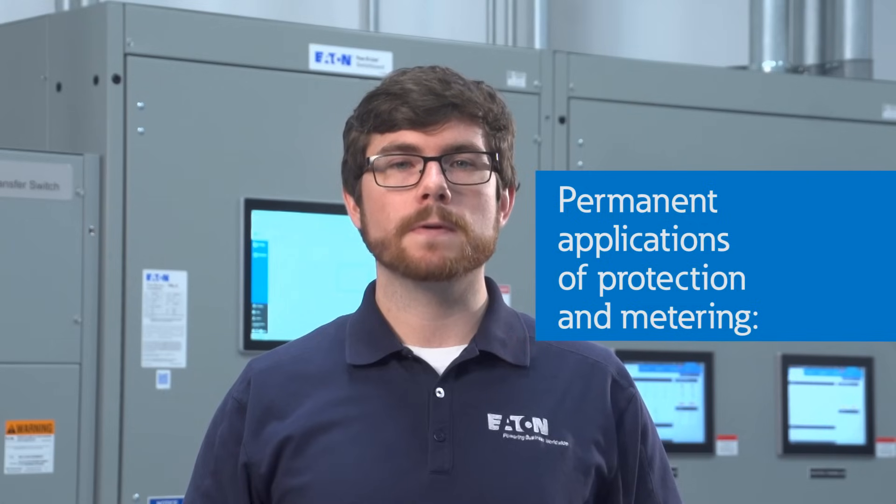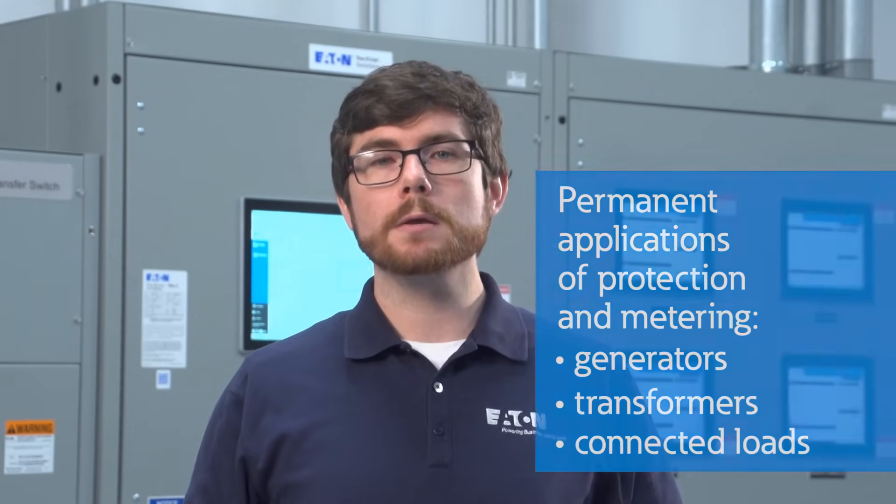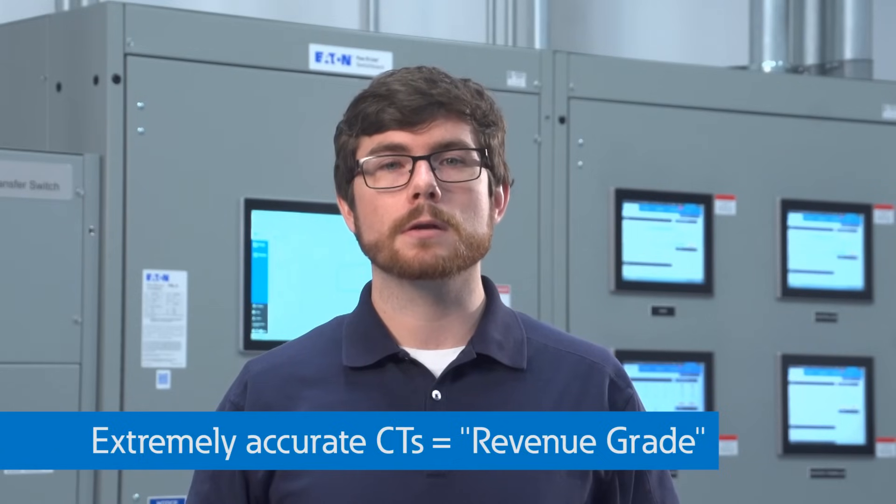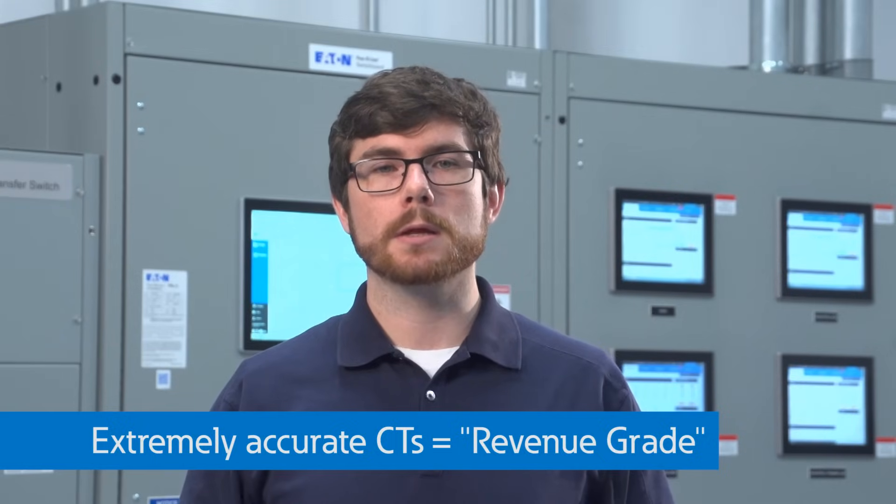For permanent applications of protection and metering, CTs can be found anywhere from generators to transformers to connected loads or anywhere we want to monitor current flowing in the system. For example, utilities use CTs at their customer's incoming service to monitor the current and power usage for billing purposes. These CTs must be extremely accurate and are considered revenue-grade since they are used for billing.